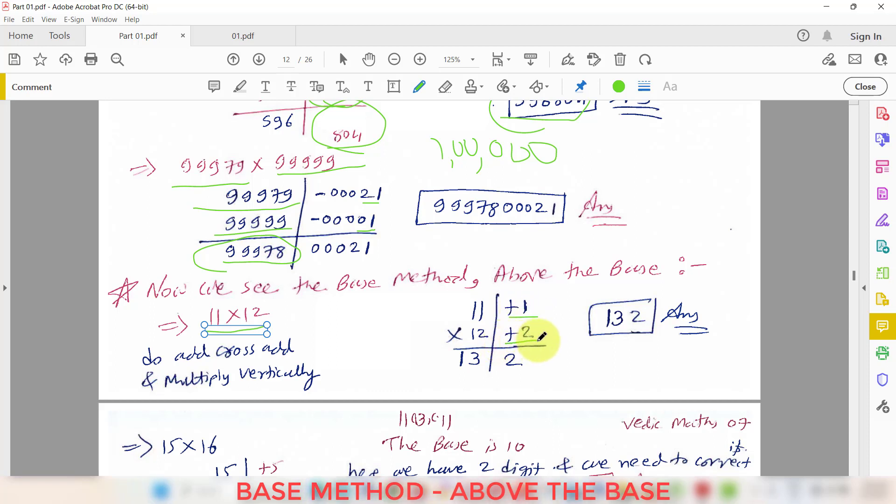Similarly 15 times 16. So 15 is excess of 10 by how much? 5. And then after 16 is excess of 10 by how much? 6. So 15 plus 6 that is 21 or 16 plus 5 that is also 21 and then 5 times 6 that's 30. But here we have taken the base as 10. So we need only one digit. So we will carry forward. So 21 plus 3 that is 24.